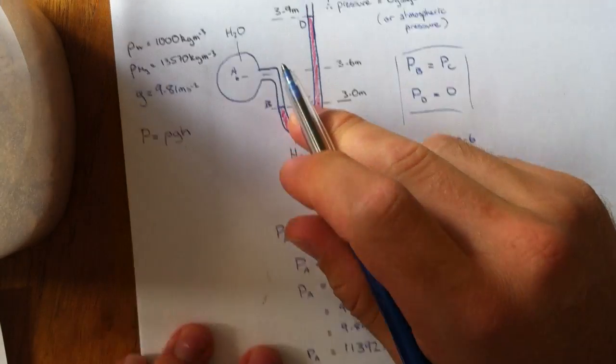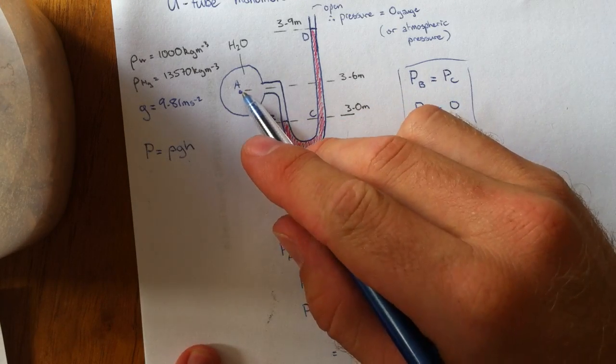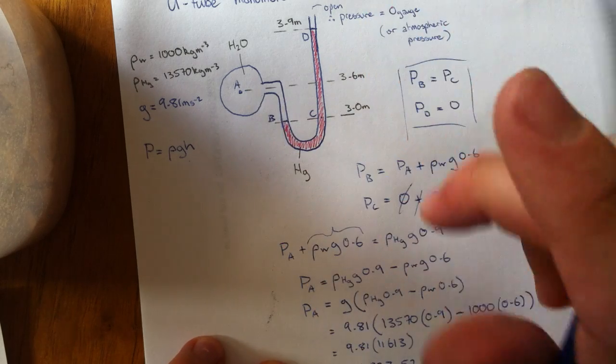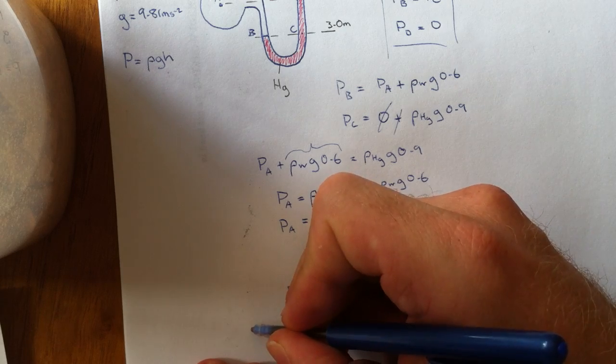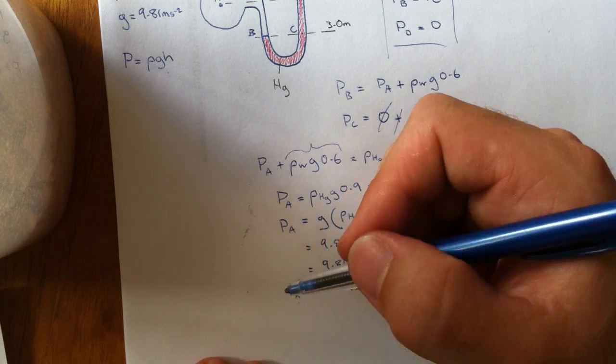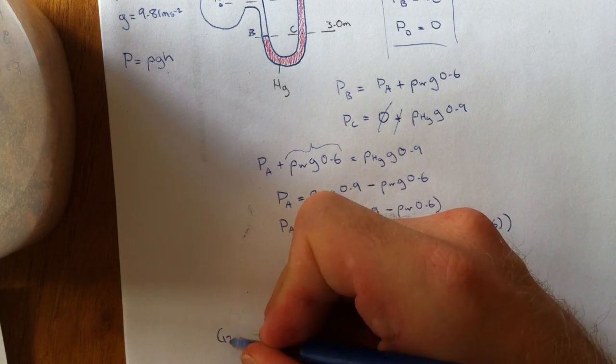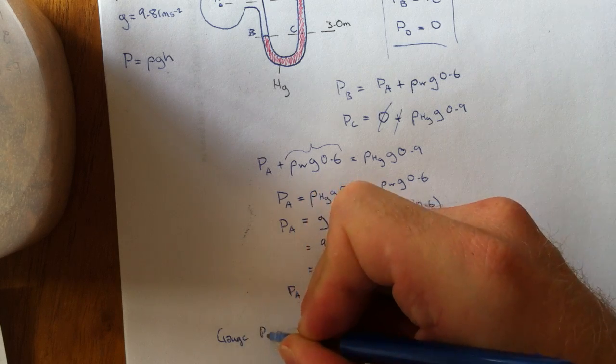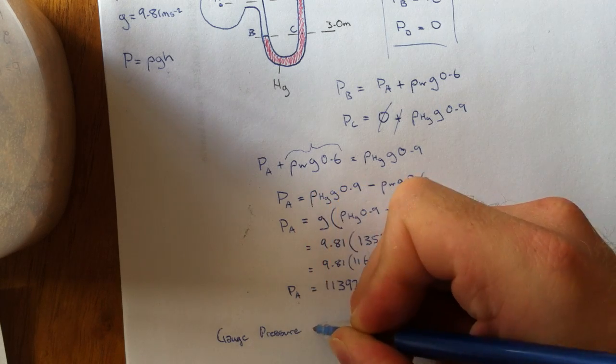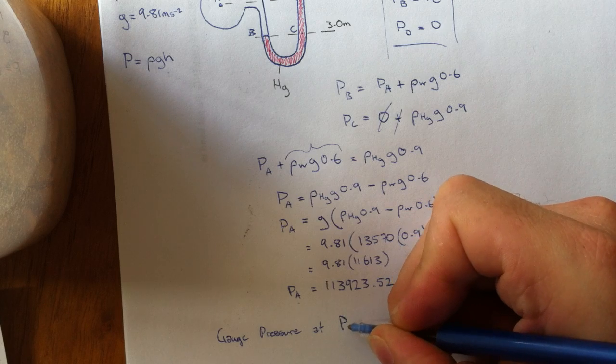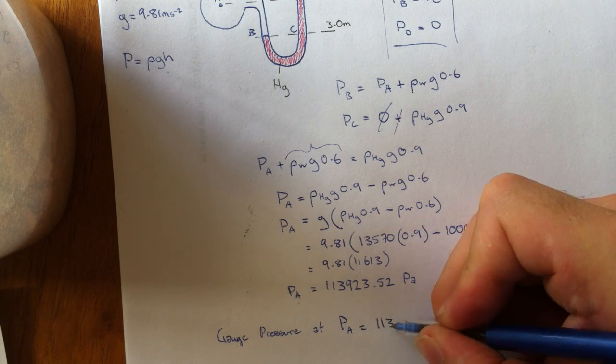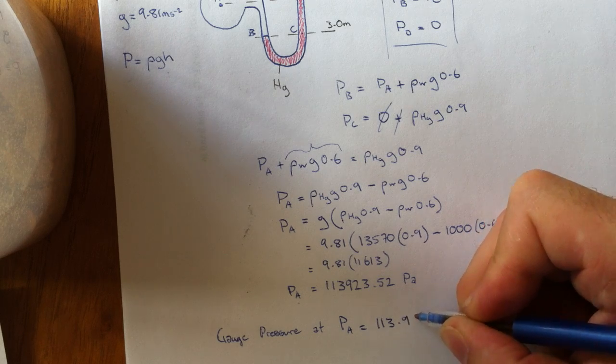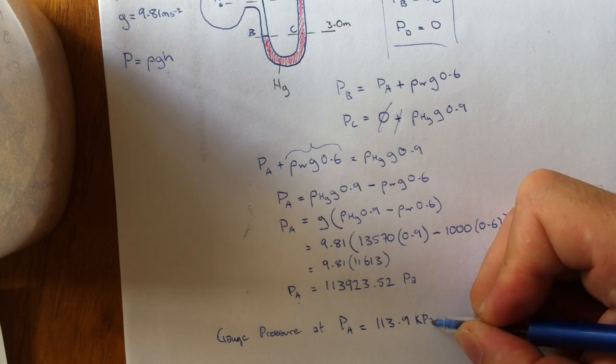It's important to state that this pressure here is not absolute. That's just called a gauge pressure. So you'd probably write in a formal sentence, you'd say gauge pressure at A is 113.9 kilopascals.